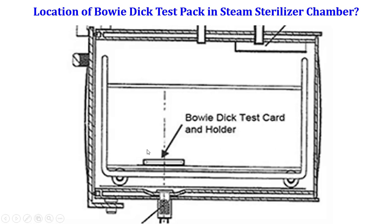The Bowie-Dick test pack is placed in the chamber on the trolley, close to the drain. The drain is located at the bottom of the chamber, and the Bowie-Dick test pack is placed just over the drain — this is the correct location for the Bowie-Dick test pack.